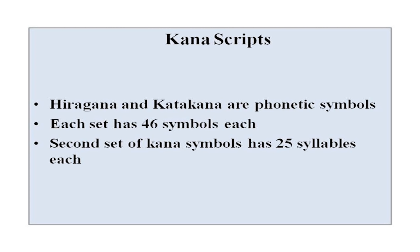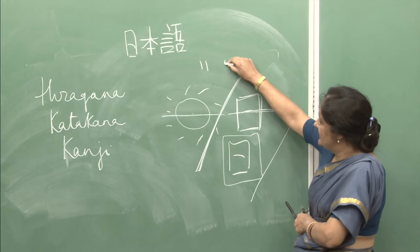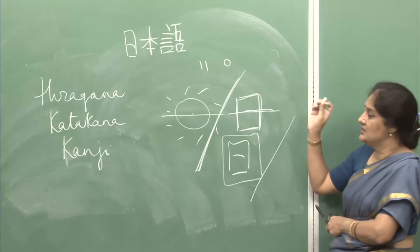Now we will see what hiragana and katakana are. The kana scripts are phonetic scripts — they are phonetic symbols. Whatever you say, you write. Hiragana has 46 basic symbols and so has katakana — also 46 basic symbols. There is a second set also for both scripts; the second set has 25 characters each, and the interesting part is that the second set is made from the first set using just two symbols. You can see the stroke order — how the character is made, what is drawn first and what comes after.